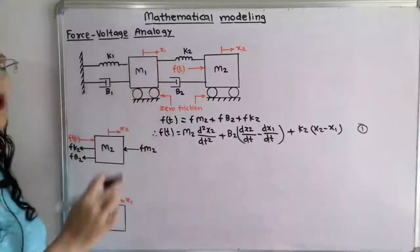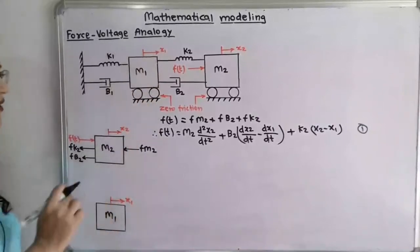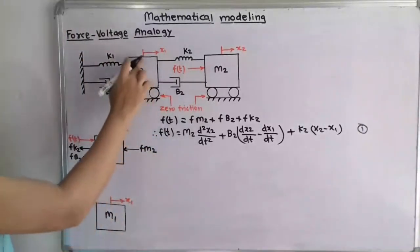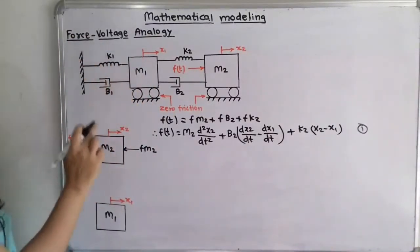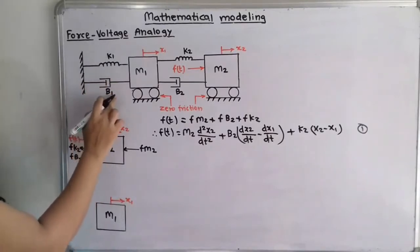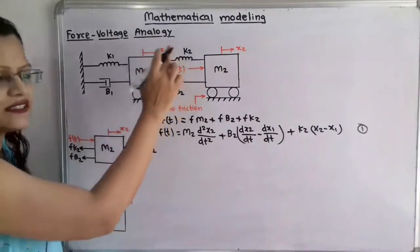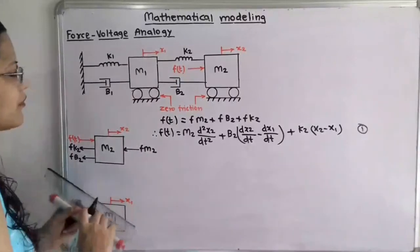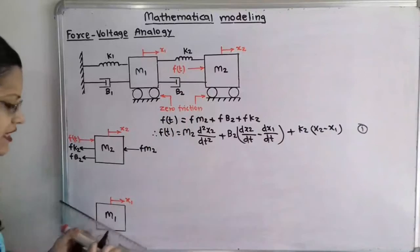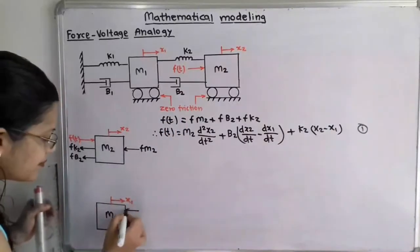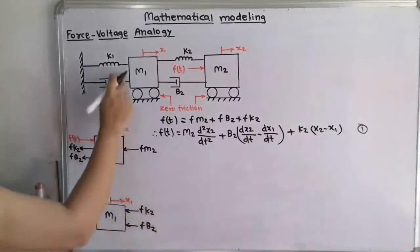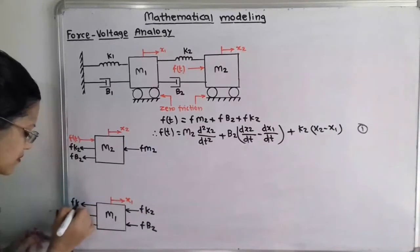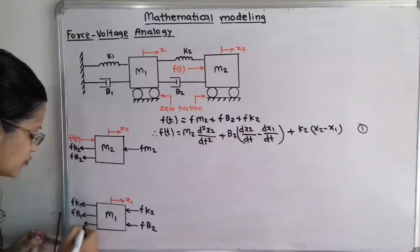Now we will move to mass M1. For mass M1, displacement is X1. The elements responsible for reaction forces are: inertia force due to M1, reaction force for spring K1, reaction force for damper B1, reaction force for spring K2, and reaction force for damper B2. K2 and B2 are on the right-hand face, so I will show FK2 and FB2 there. On the other face there is K1 and B1, so I will show FK1, FB1, and inertia force FM1.